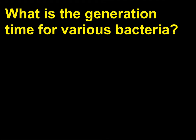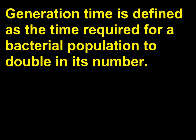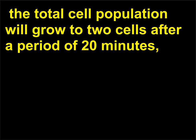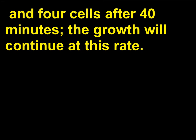What is the generation time for various bacteria? Generation time is defined as the time required for a bacterial population to double in its number. If a culture tube is inoculated with one cell that divides every 20 minutes, the total cell population will grow to two cells after 20 minutes, and four cells after 40 minutes; the growth will continue at this rate.